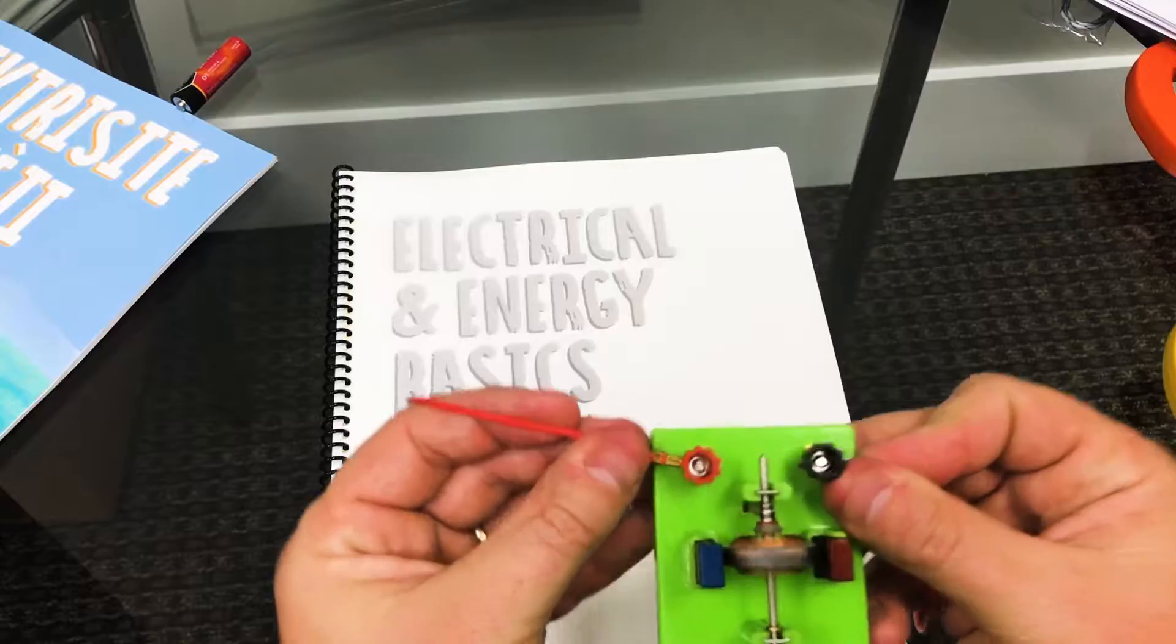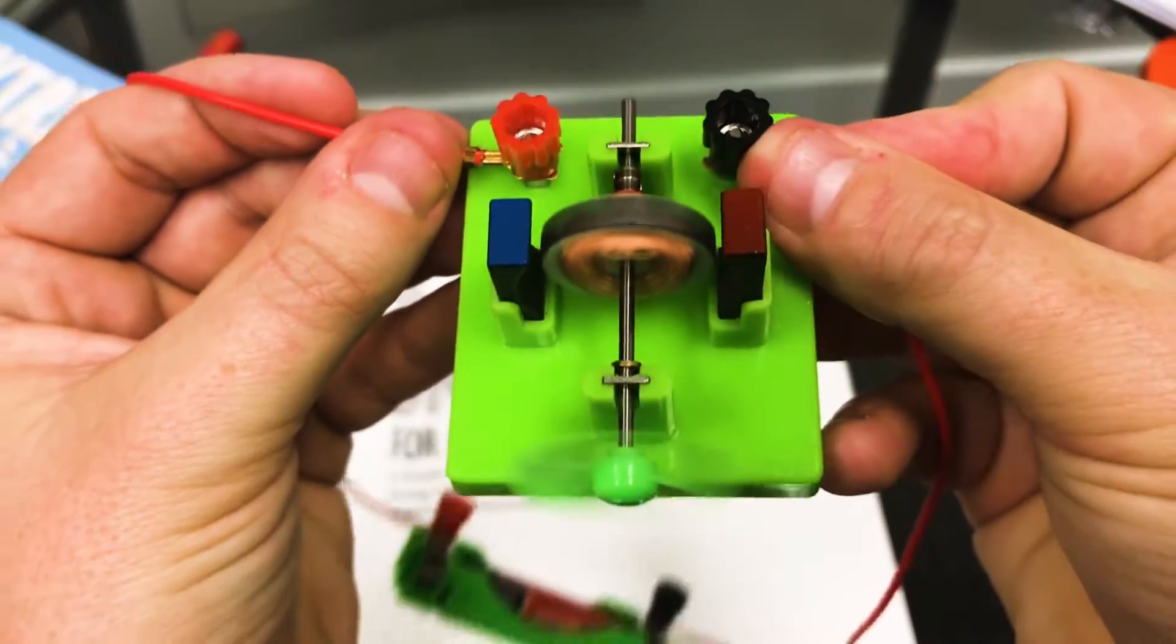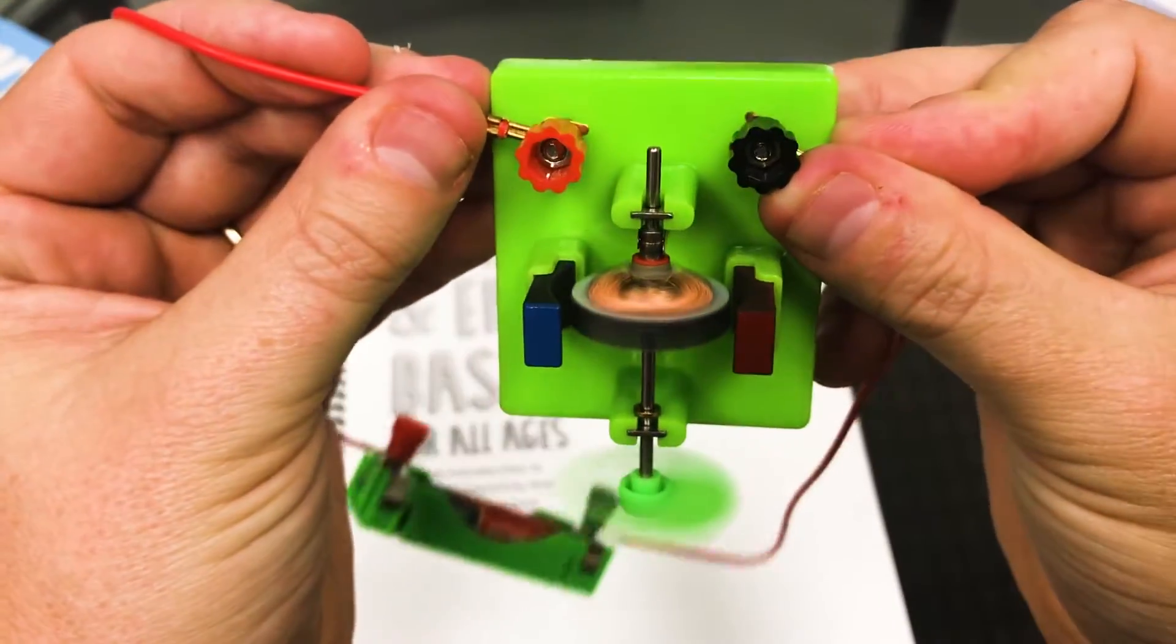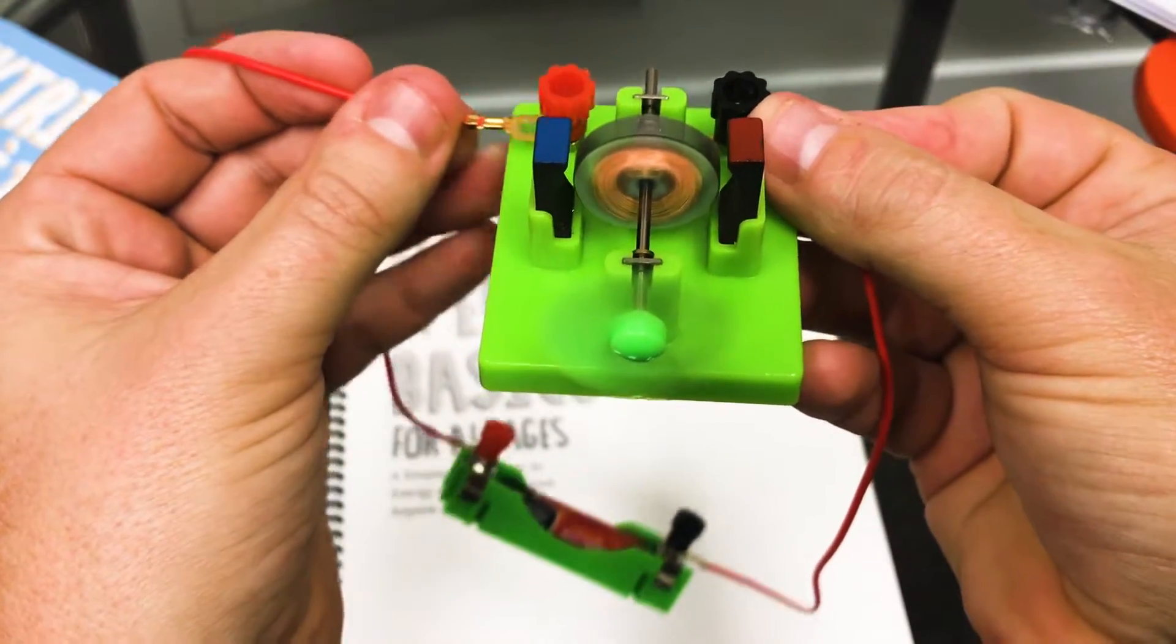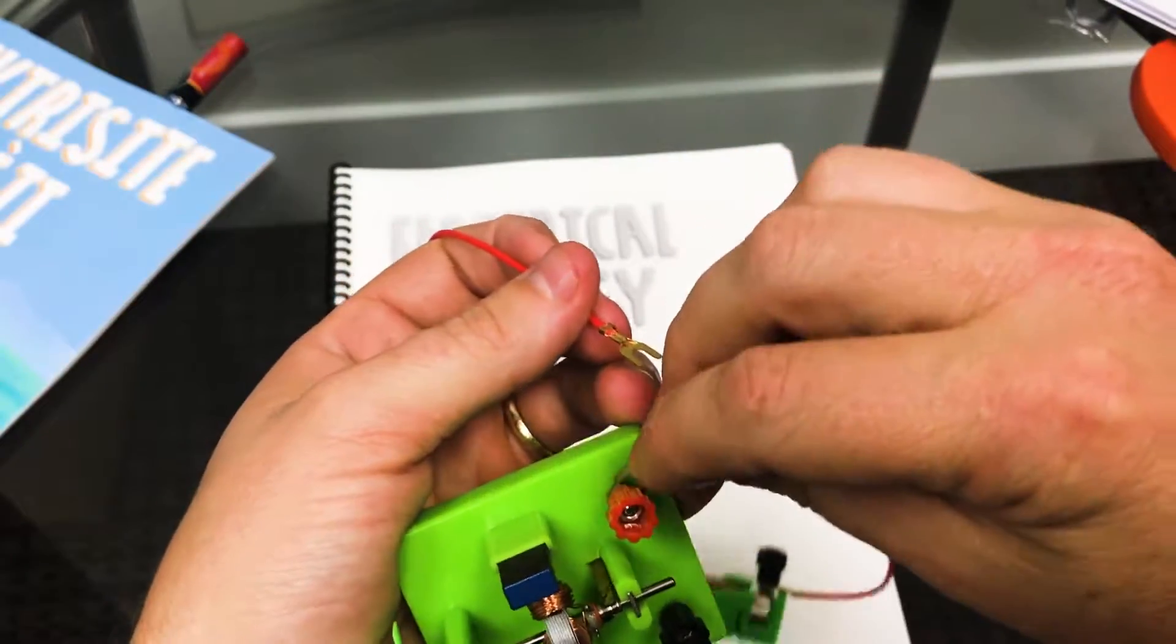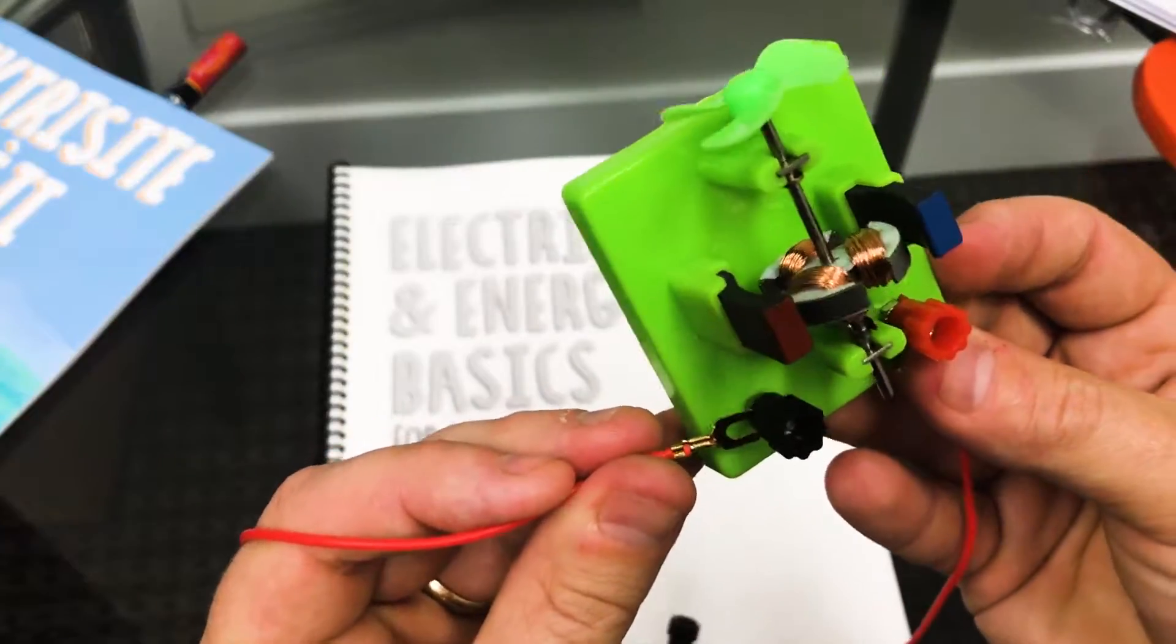You can see this thing's really spinning just on a single double A 1.5 volt battery. And if I change the polarity on it, it'll spin in the opposite direction.